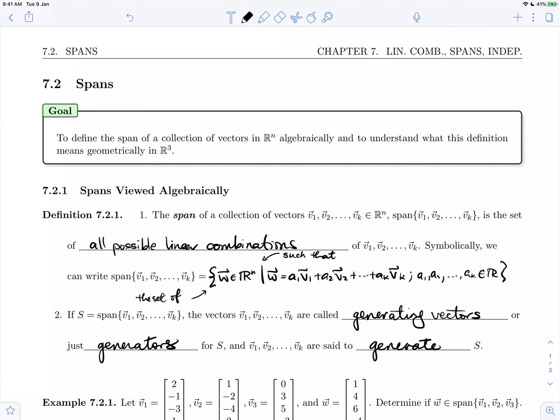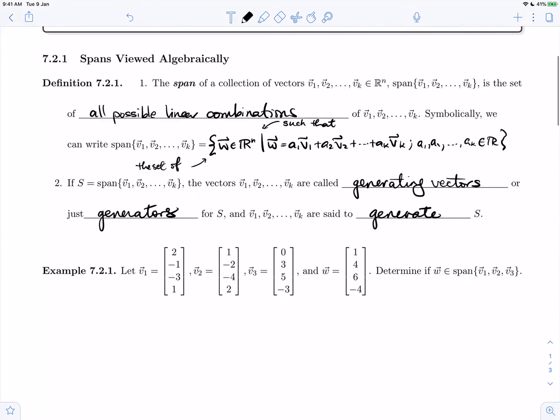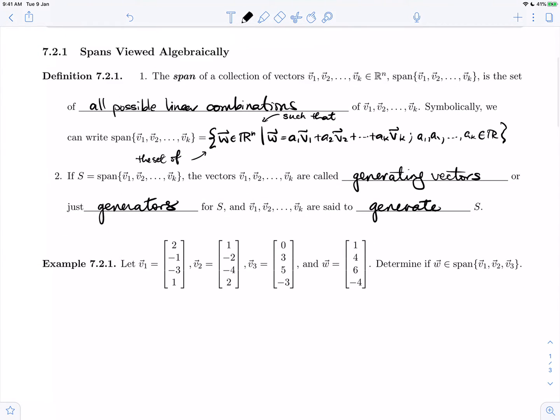So there's our vocabulary. Now let's look at Example 7.2.1. We're going to apply the definition. Here we are given a set of vectors v1, v2, v3, and w, and we're asked to determine if w is in the span of these vectors.